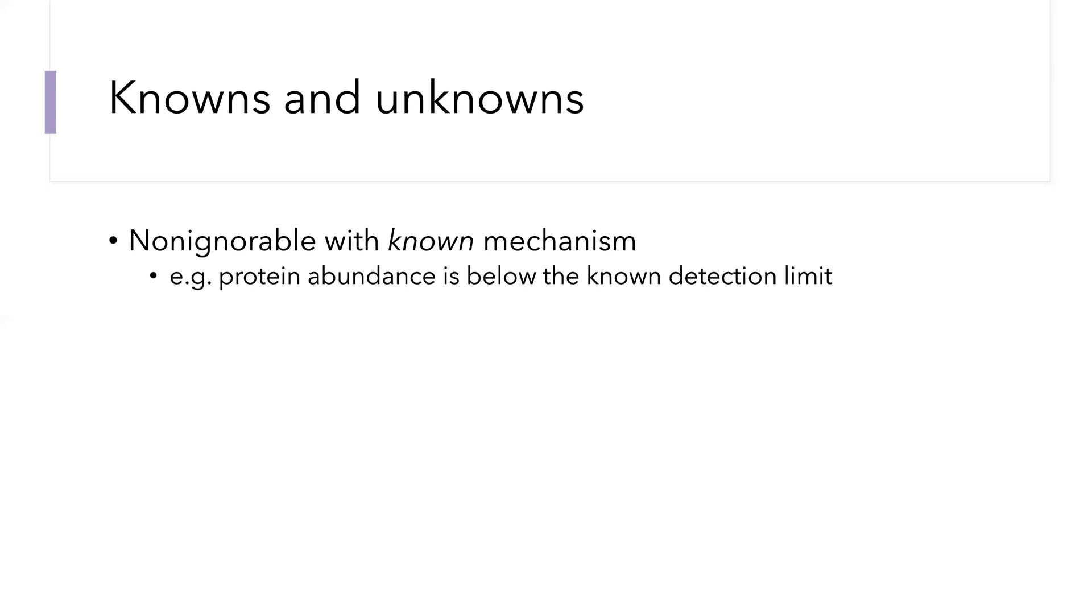There are a few other distinctions I'd like to make. Within non-ignorable missingness patterns, we can think about non-ignorable missingness with a known mechanism. For example, when the protein abundance is below some known detection limit, we know exactly what that probabilistic mechanism is. We have to account for it, but we have it.